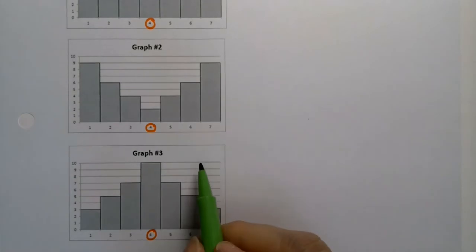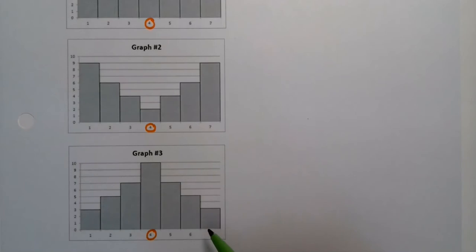The answer is actually graph number three. Graph number three right here has the least spread, right? Because most of it's piled up around four, very little of it is on the one and the seven, which are the farthest away from four.